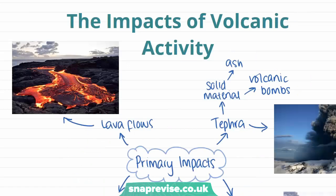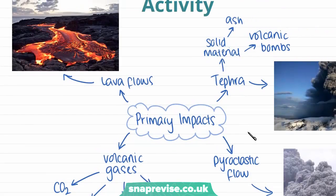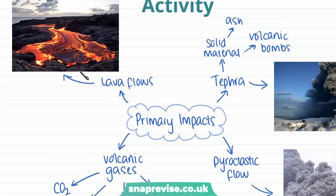Now we're moving on to look at some of the impacts of volcanic activity. Impacts can be divided into primary impacts and secondary impacts. The primary ones are those that happen first. One primary impact is lava flows — when magma from the mantle comes out onto the Earth's surface and forms flows of lava, which is really, really hot molten rock. It can pretty much destroy anything in its path because it is so hot.